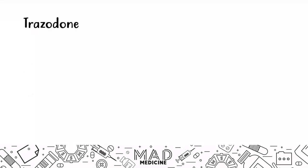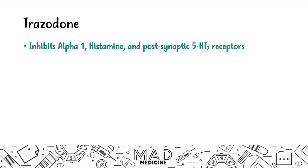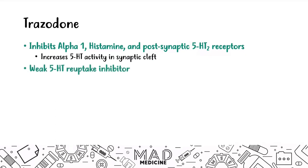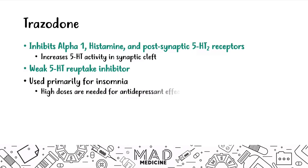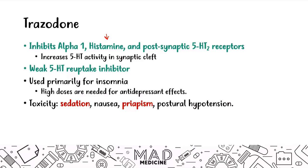The third drug is trazodone. Trazodone inhibits alpha-1, histamine, and postsynaptic serotonin-2 receptors, ultimately leading to increased serotonin activity in the synaptic cleft. It is also a weak serotonin reuptake inhibitor. Trazodone is usually used for insomnia — at high doses it has antidepressant effects, but because of its histamine side effect profile, it's better tolerated at low to medium doses to treat insomnia. A key toxic side effect is sedation due to histamine receptor blockade.